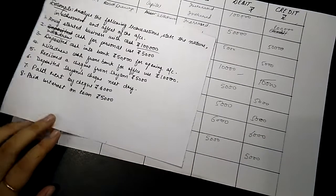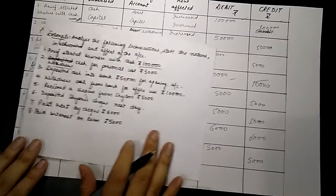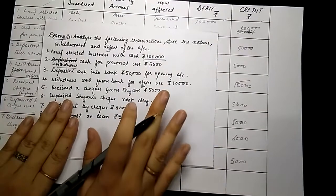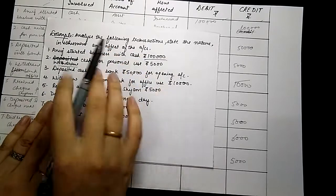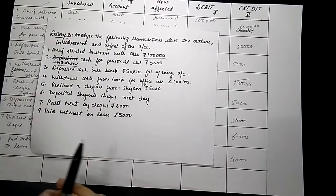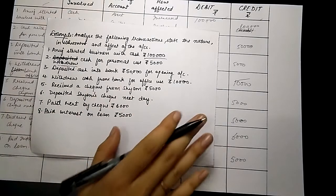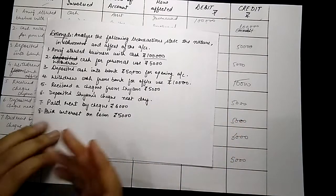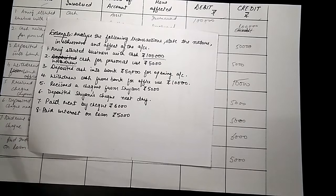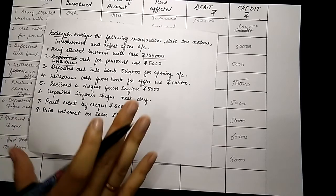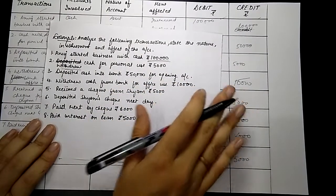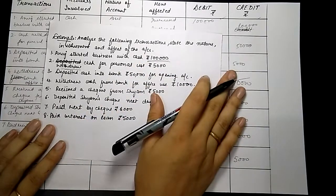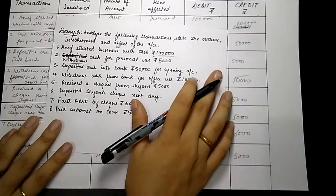I hope you have understood this. This was all the basics of the rules of debit and credit, which is very important from an exam point of view. You'll face these types of transactions in all exams — CS, CPT CA, BCom, and plus one and plus two. Write your doubts in the comment section below, and if you like the video, please share, like, and subscribe.